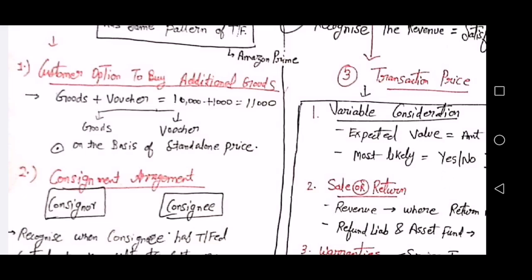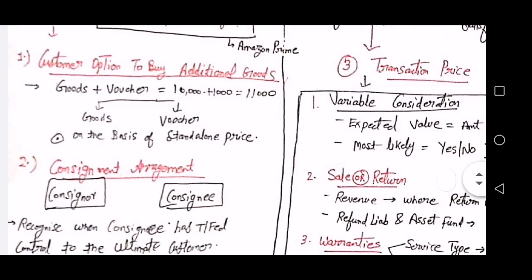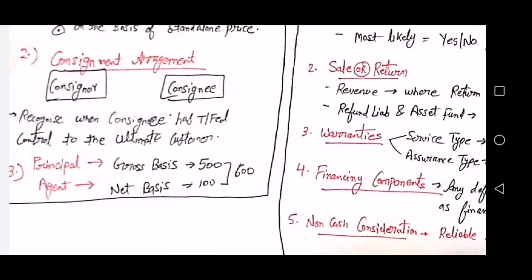When identifying performance obligations: if a customer option to buy additional goods is given — for example, a voucher — the value of goods and voucher should be separated based on standalone price. For consignment arrangements, revenue should be recognized when control is transferred to the ultimate customer. In a principal and agent case, if the principal sells to the agent for 500 and the agent sells further for 600, the principal recognizes revenue on a gross basis of 500 and the agent on a net basis of 100.